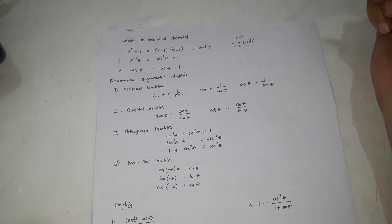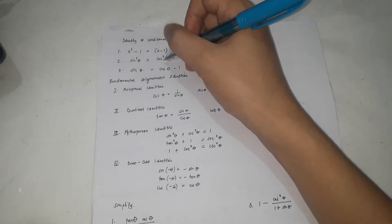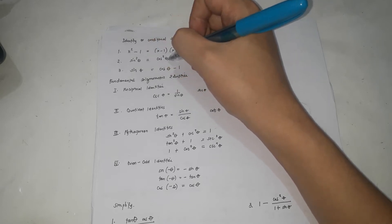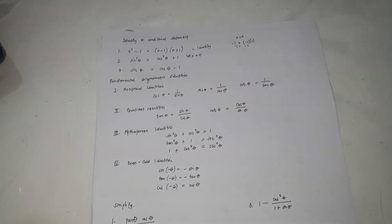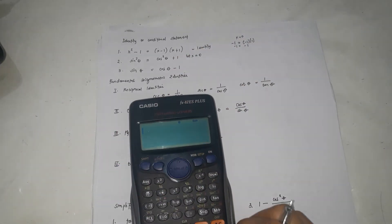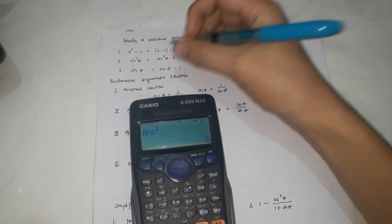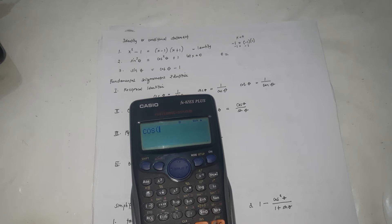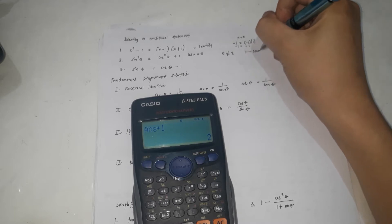For number 2, this would be difficult if it's in simplified form, so what you're going to do is find values to test. Let x equal 0. If x equals 0, sine squared 0 equals 0 on the left side, but cosine squared 0 plus 1 equals 1 plus 1 equals 2 on the right side. They are not equal, therefore this is a conditional statement. One value where they're not equal is theta equals 0.